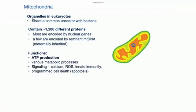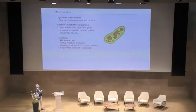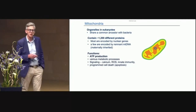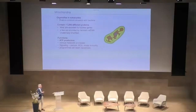Mitochondria are organelles in our bodies — in animals, plants, and other eukaryotes — and they share a common ancestor with bacteria, so very similar structures inside mitochondria belong in bacteria as well. Mitochondria contain about 1,200 different proteins, most of them encoded by nuclear genes, but there is still remnant mitochondrial DNA that codes 13 proteins still needed by the mitochondria.